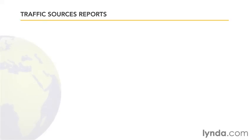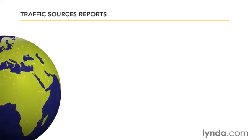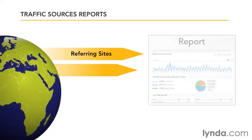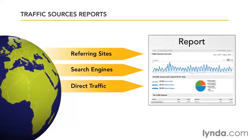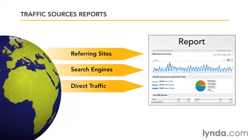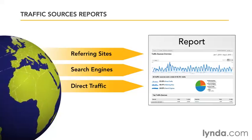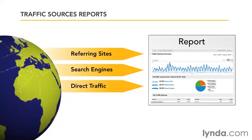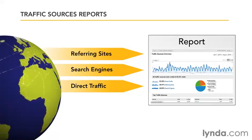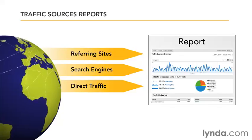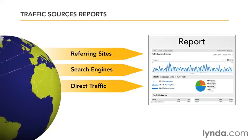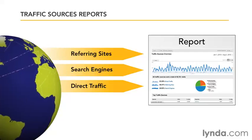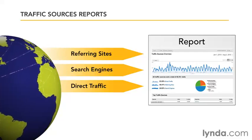Analytics is going to split all of our traffic up into three main buckets: referring sites, search engines, and direct traffic. Referring sites are just a fancy way of saying these are links — links where some other website has referred traffic over to yours. Search engines are special cases of this, where Google Analytics recognizes that these aren't just any websites — these are search engines — and it's able to pull out keywords from the URL as well.